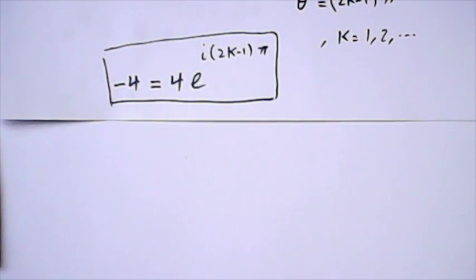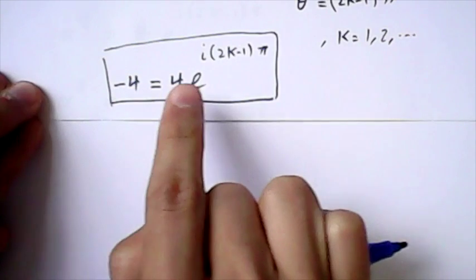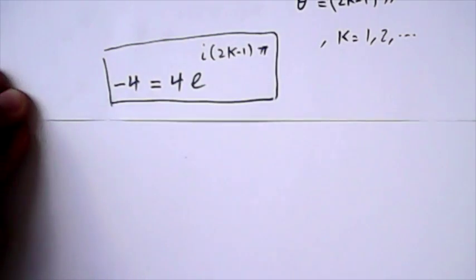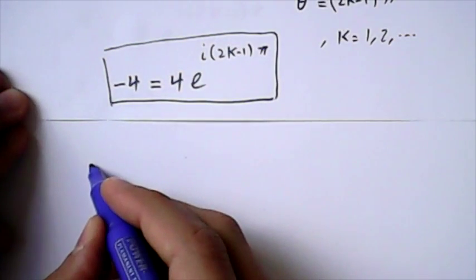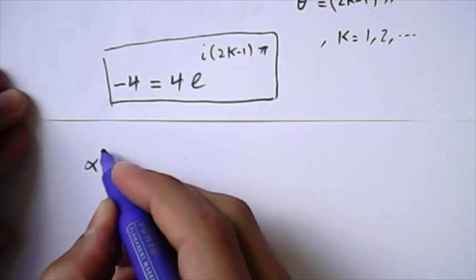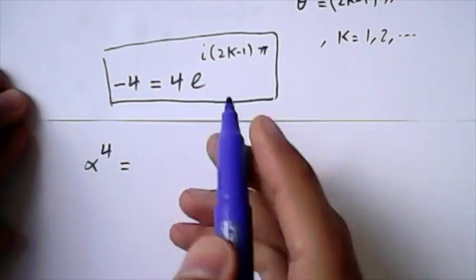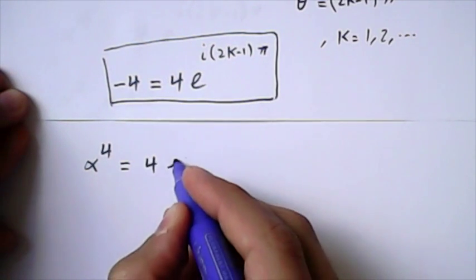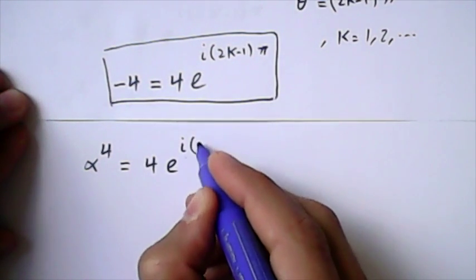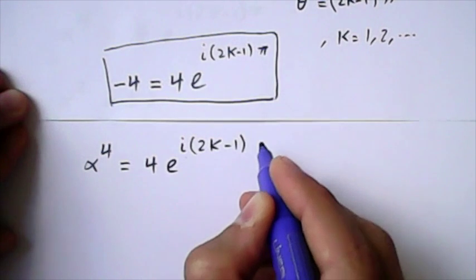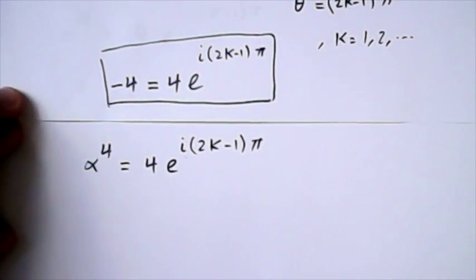So let's start with here. I have written minus 4 in another form. But the question is to find alpha, given that alpha to the power of 4 equals minus 4. I'm going to write in this manner: 4 times e to the power of i, 2k minus 1 times pi.